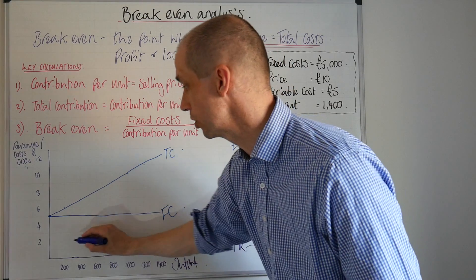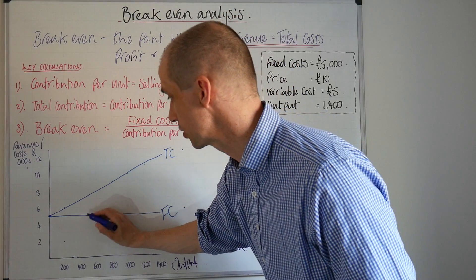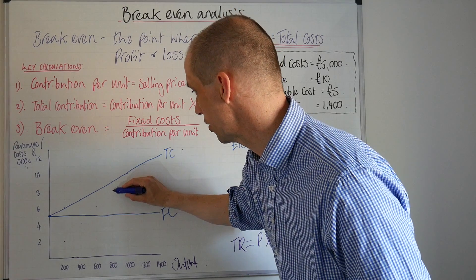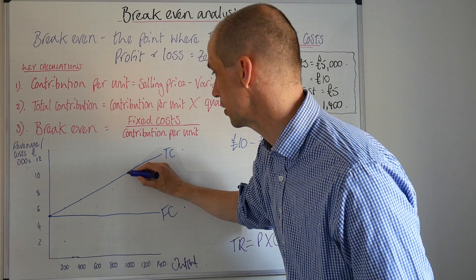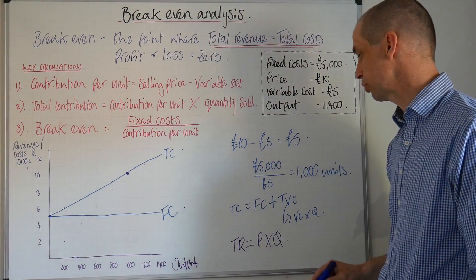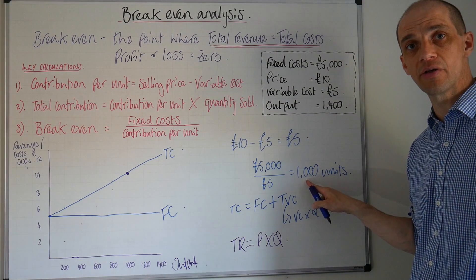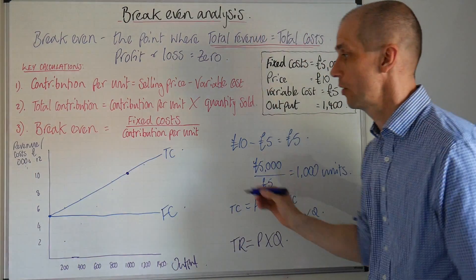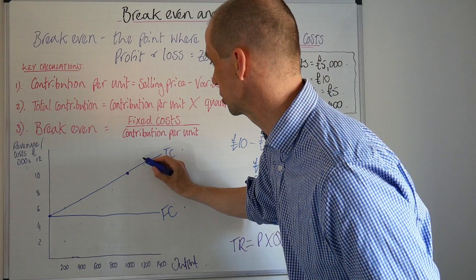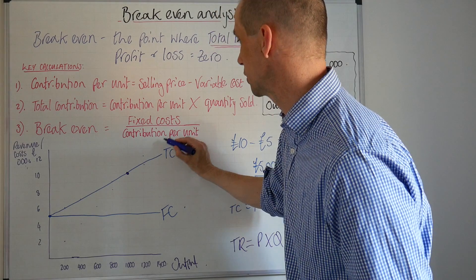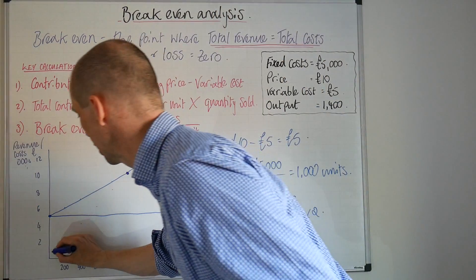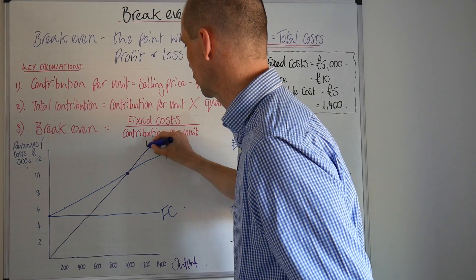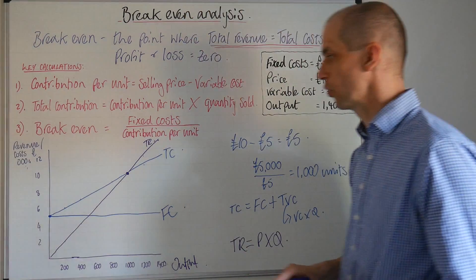Starting off here, £10 times 200 obviously means that we end up at £2,000, and then £4,000, then £6,000, then we're up to £8,000, and then we're at our break-even point. Well we saw here we break even at 1,000 units. What do you know, we've got 1,000 units there as well. Now let's continue working this through and we can see that we end up with this sort of scenario playing through. So let's just highlight that total revenue there.